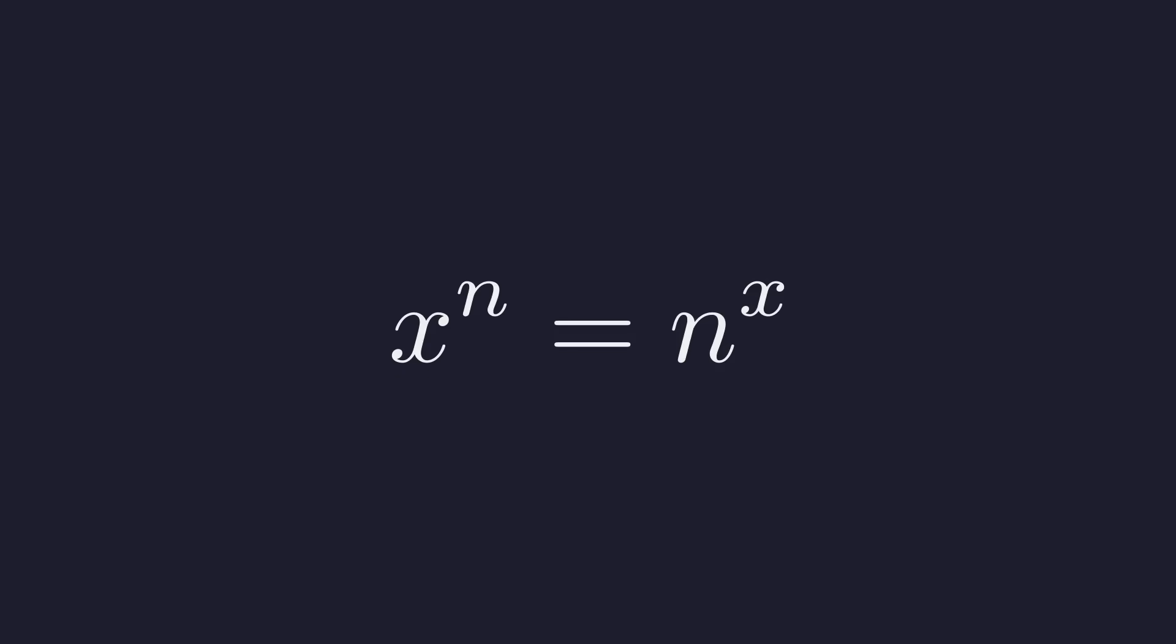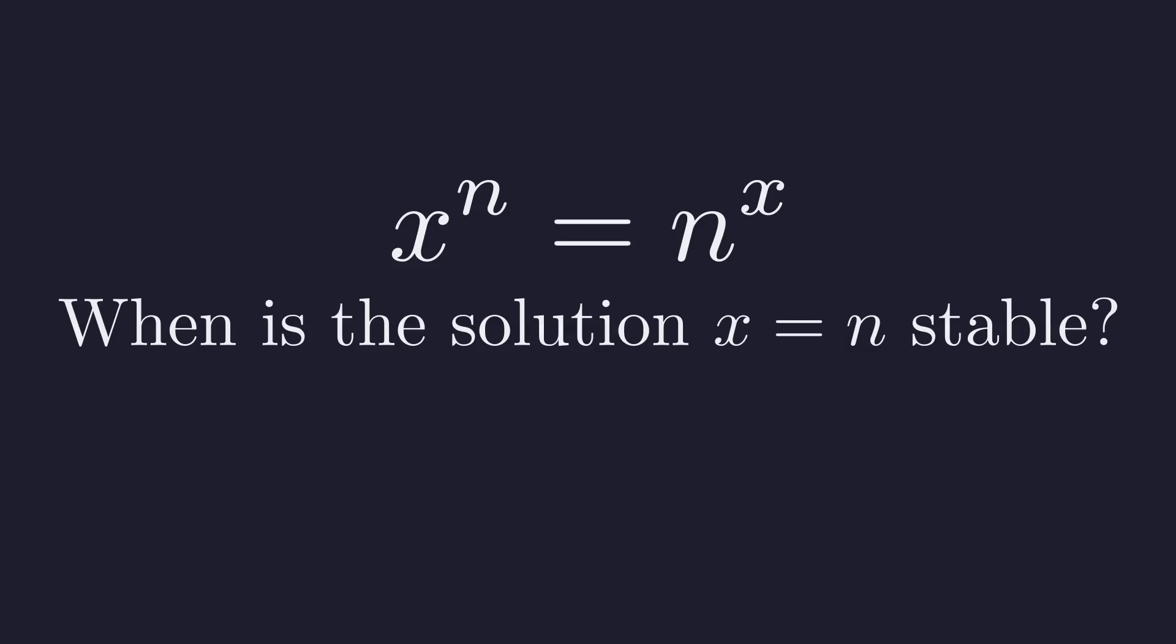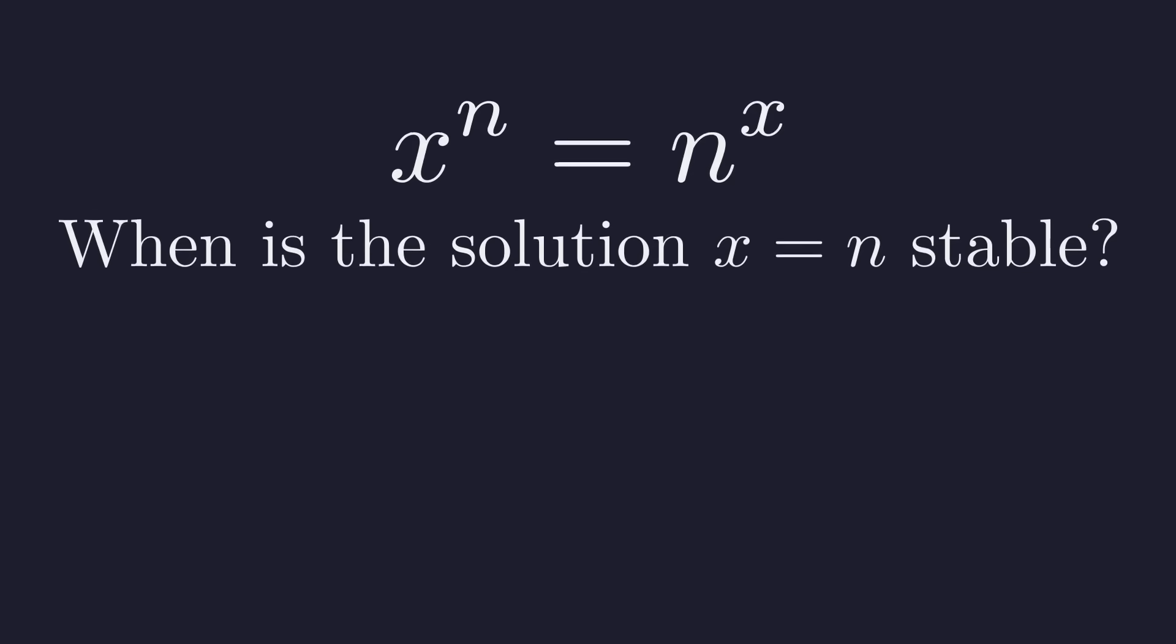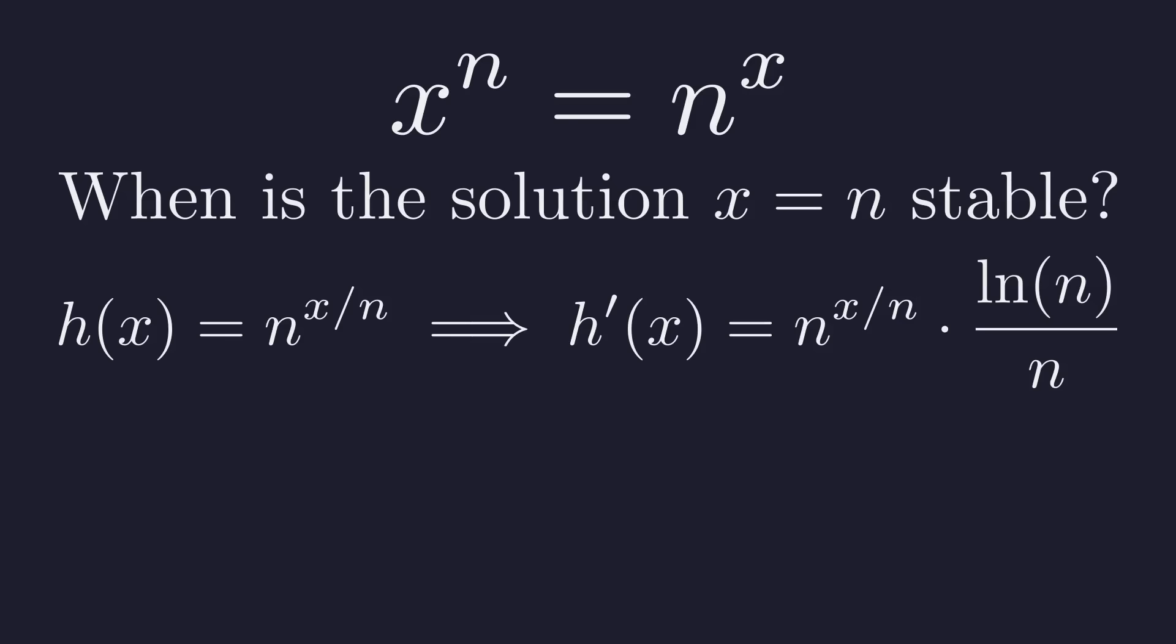this simplifies to x to the n equals n to the x. For any integer n, there is an obvious solution x equals n. The crucial question is for which values of n is this integer solution stable? The general function is h of x equals n to the x over n. Its derivative h prime of x is n to the x over n times the natural log of n divided by n.